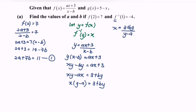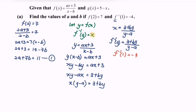So x = (3 + by) / (y - a), which means f inverse of y = (3 + by) / (y - a). Now applying f inverse of 1 = negative 4: substitute 1 in, giving (3 + b) / (1 - a) = negative 4.